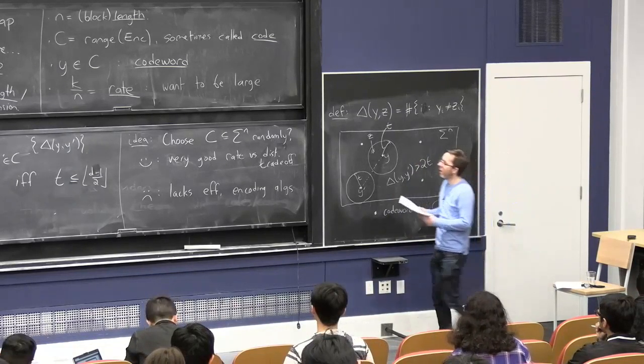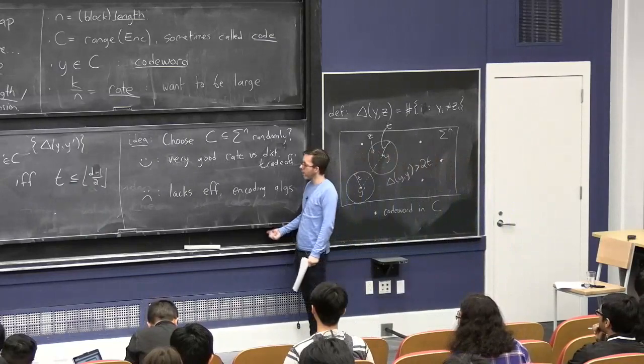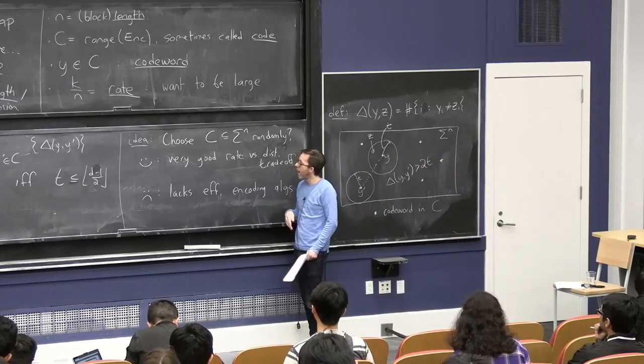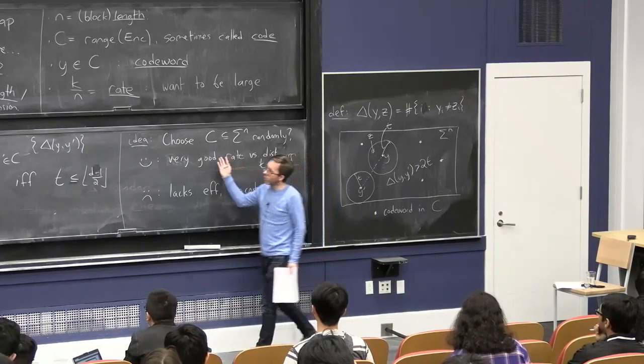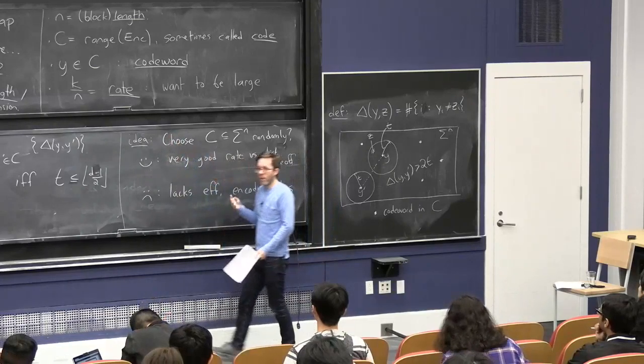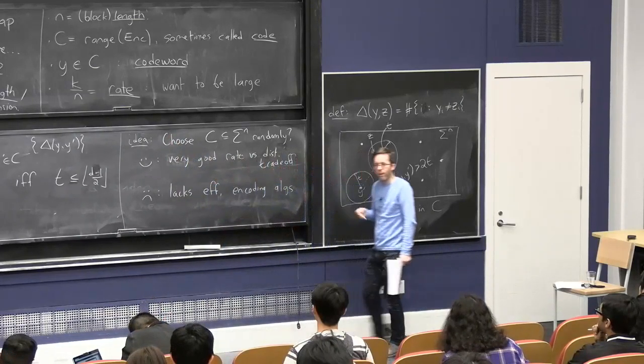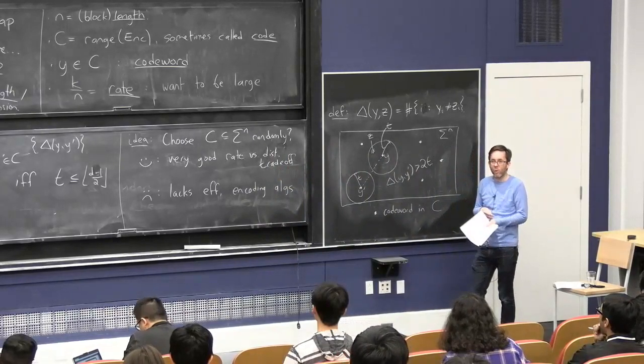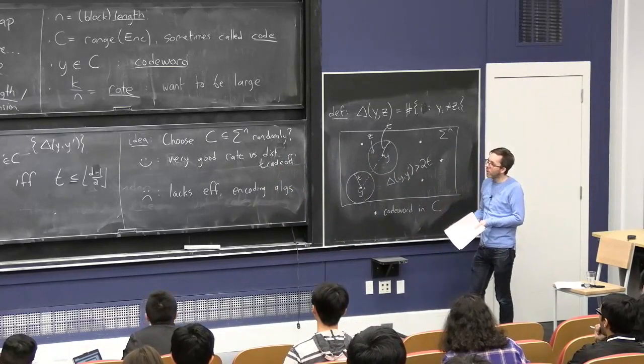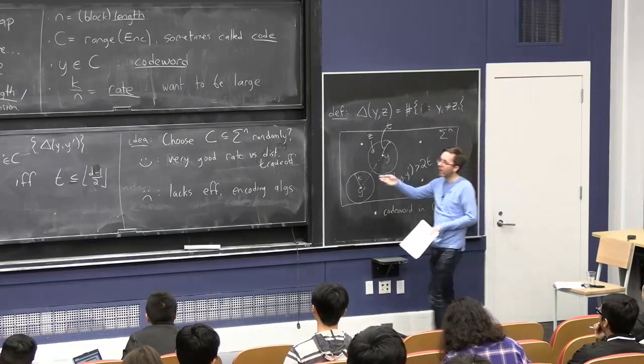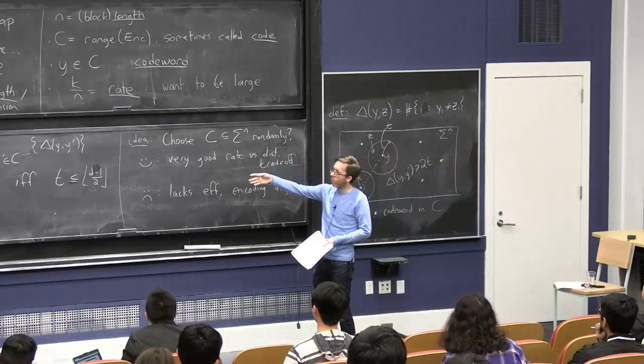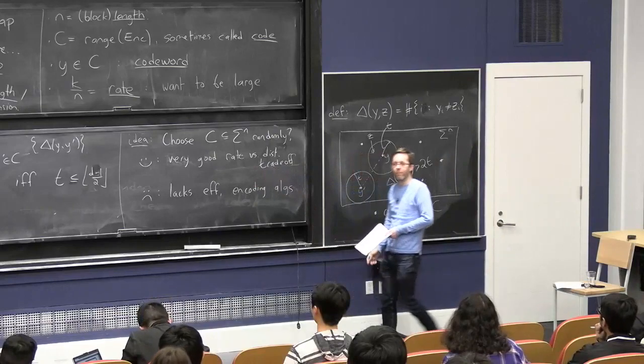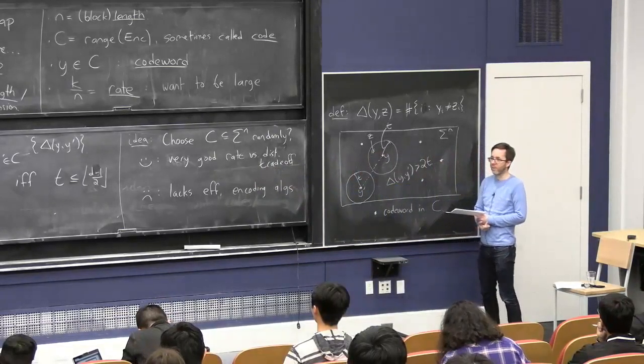A typical basic goal in the theory of error correcting codes is to find good encoding functions that have several nice properties: high rate, high minimum distance, and efficient algorithms for encoding and decoding. Given z, find the closest y and therefore the originally intended message x.